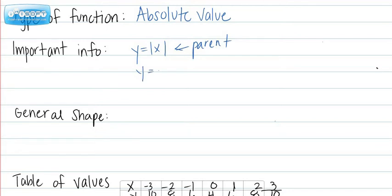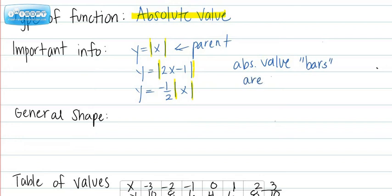Some other examples would be y equals absolute value of 2x minus 1, or y equals negative one-half times the absolute value of x. Now hopefully you can understand and recognize that all these have the absolute value bars in common. So we have an absolute value function when I have absolute value bars present.